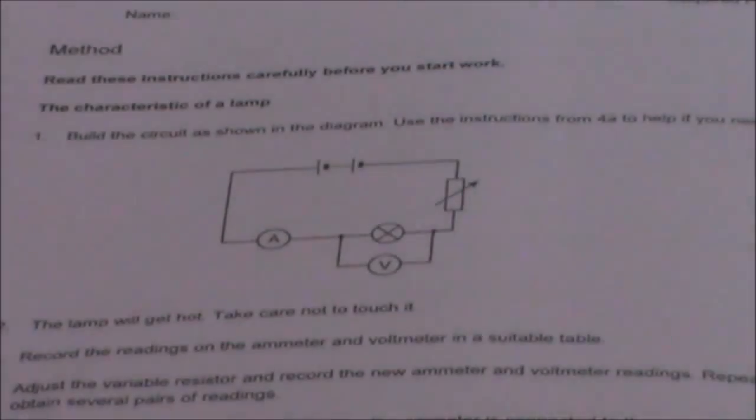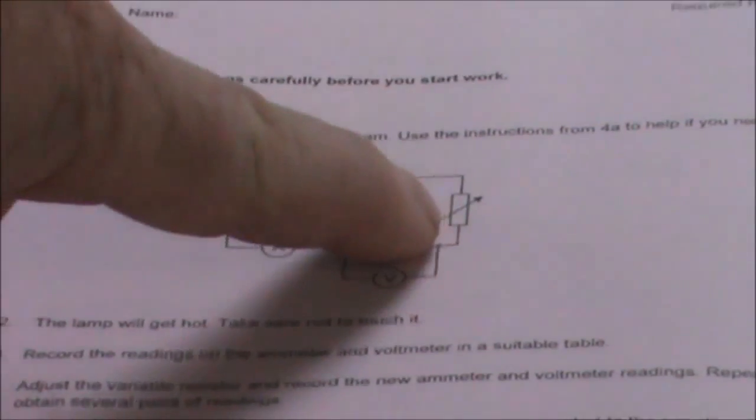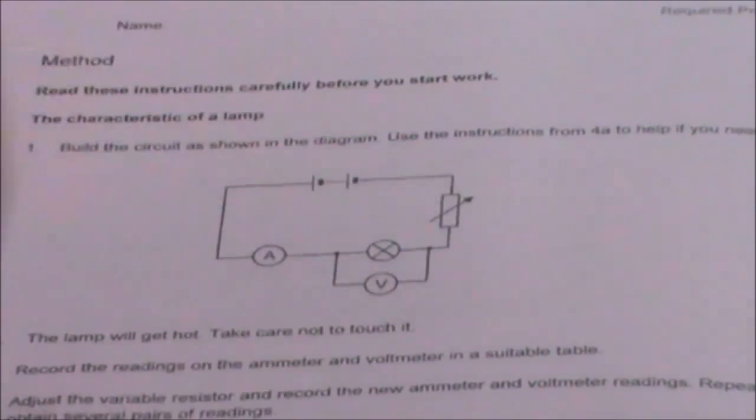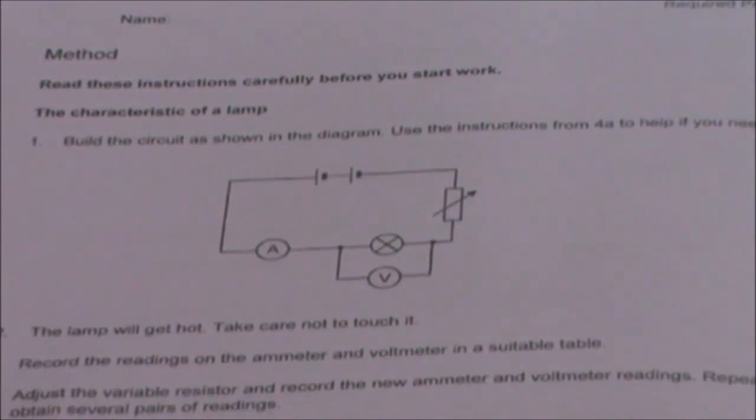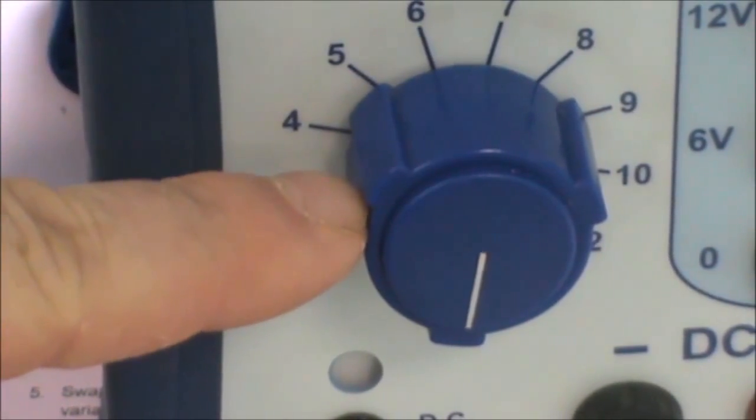So the first thing to do is to set up the circuit as shown in the required practical instructions. Now you'll notice that my circuit has a battery and a rheostat. Remember, I am replacing all of those with my power supply because it has the rheostat built in here.